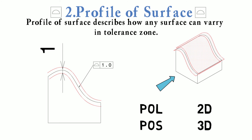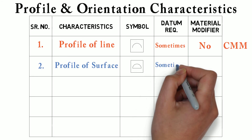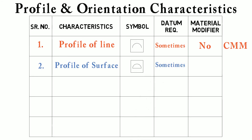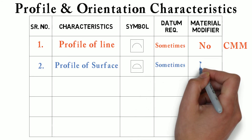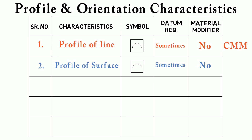You may understand that in profile of line we were controlling along a 2D only, while in profile of surface we are controlling along 3D. Here also, datum requirement for this tolerance is sometimes required, and we don't use material modifiers here. This tolerance is also checked with the help of a CMM machine.